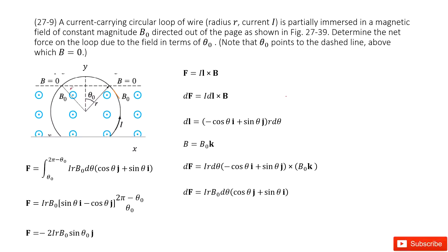This wire — just some part is in the magnetic field, and some part is not. Since magnetic force is only exerted by magnetic fields, we just need to look at the wire from this point to the origin, and then to this part.